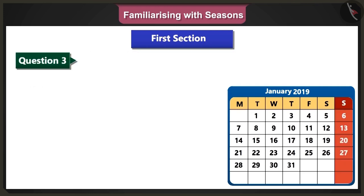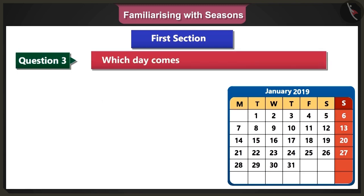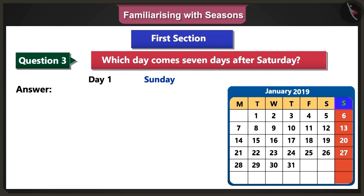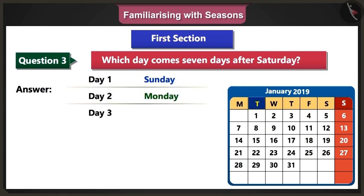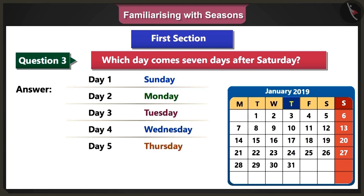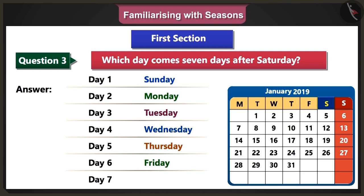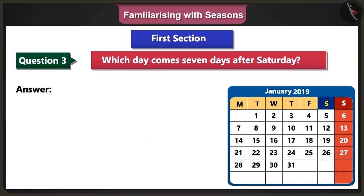Third question: Which day comes seven days after Saturday? Answer: After Saturday comes Sunday, Monday, Tuesday, Wednesday, Thursday, Friday, and Saturday. So, Saturday comes again after seven days.